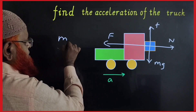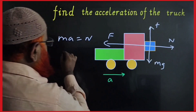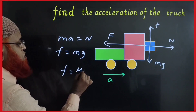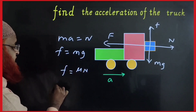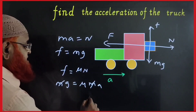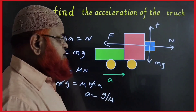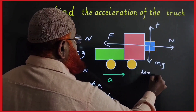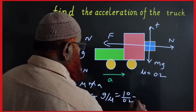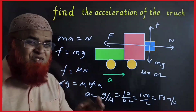Pseudo force MA and normal reaction N. Friction equals Mg. Friction is μN, so Mg equals μ times MA. M gets cancelled. Acceleration of a truck is going to be G by μ. For example, if coefficient of friction is 0.2, then 10 by 0.2 = 100 by 2, which is 50 m/s².